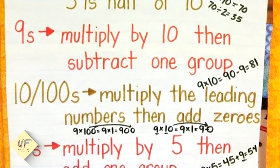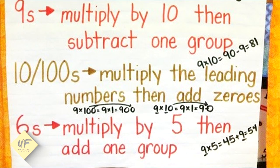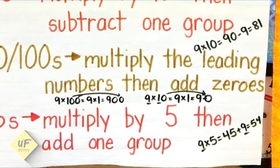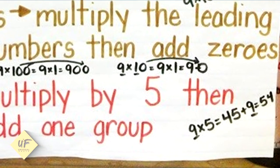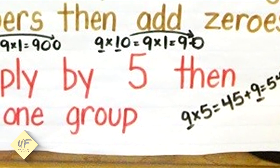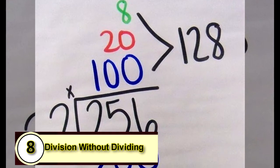Sixes: Multiply by 5 then add one group. 9 times 5 equals 45 plus 9 equals 54. Maybe you find it easier to use one of these strategies instead of just doing it the good old-fashioned way.